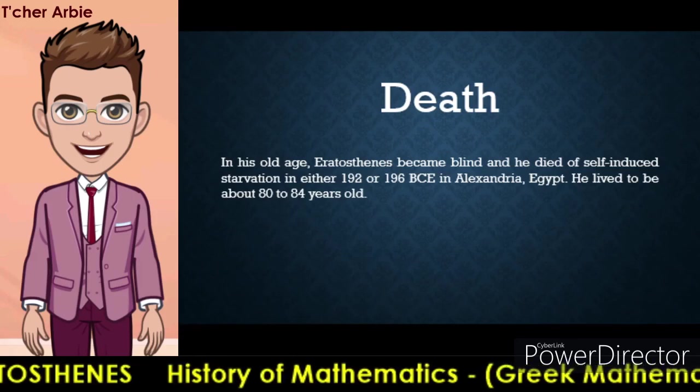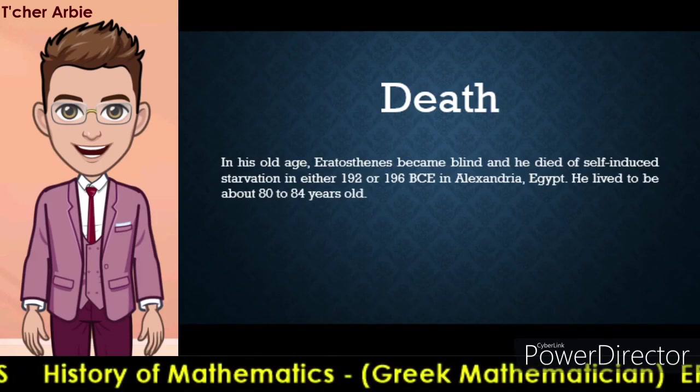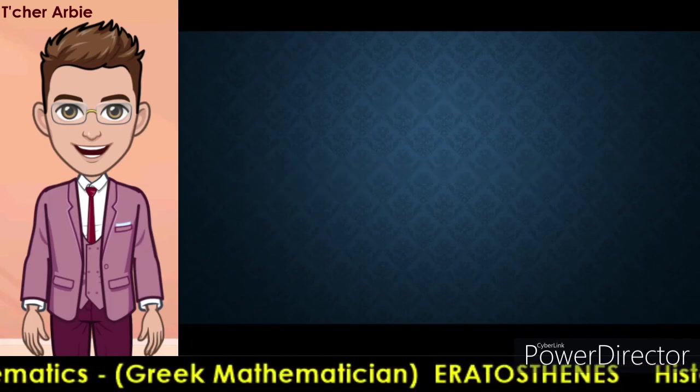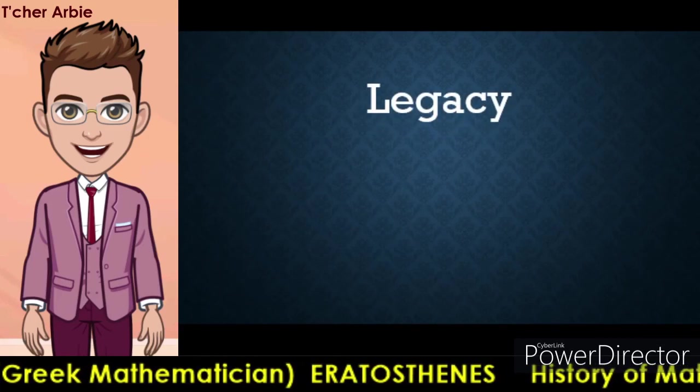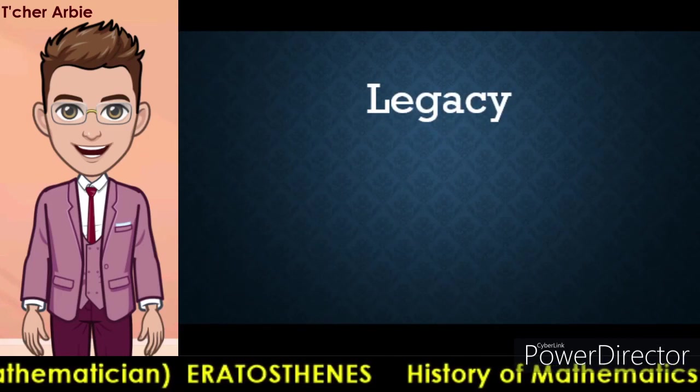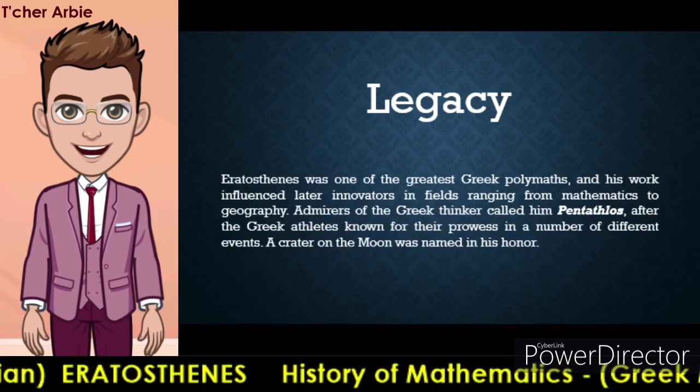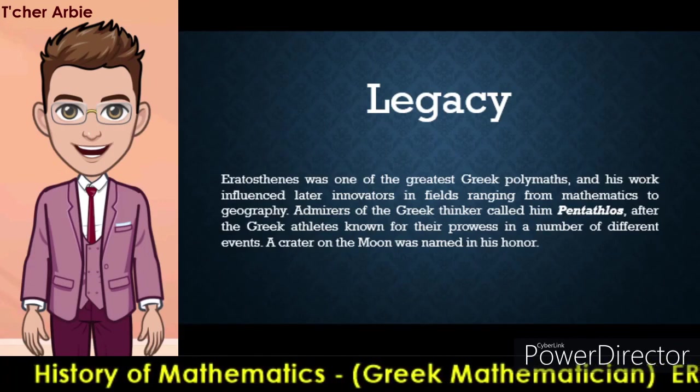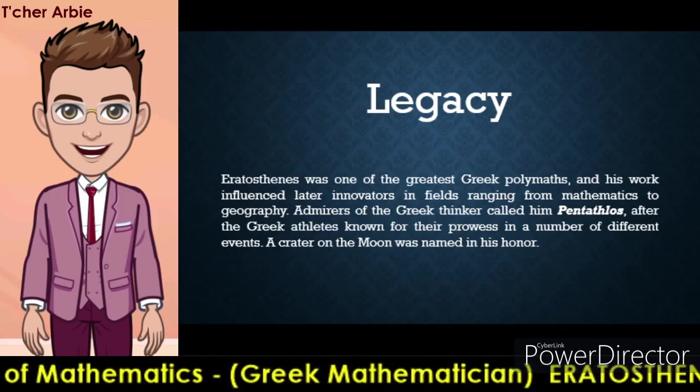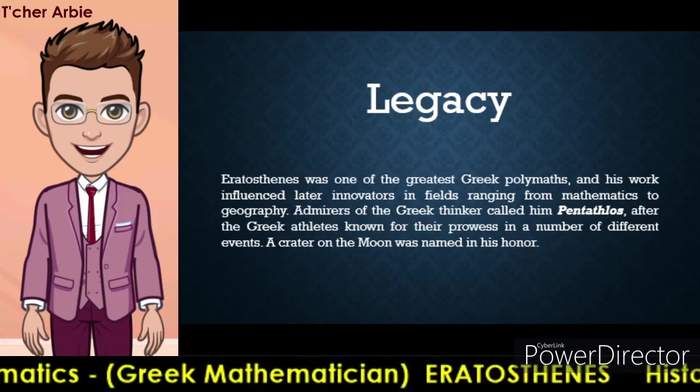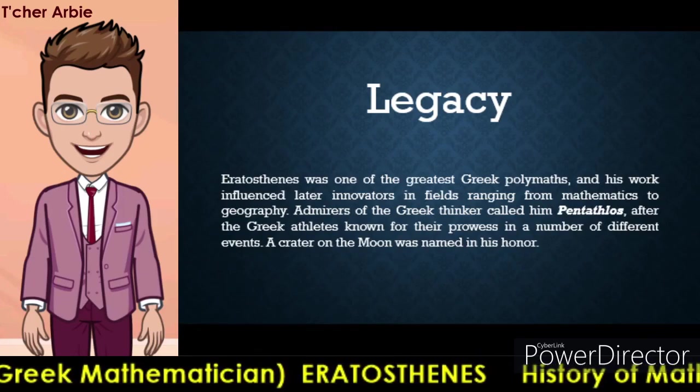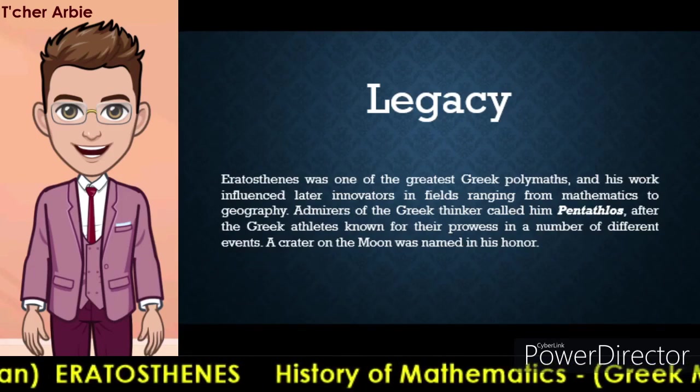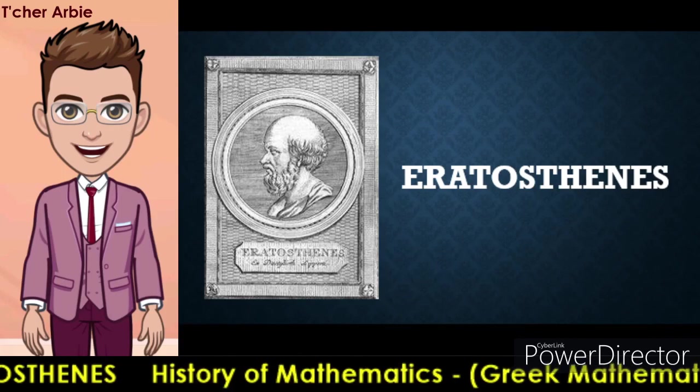He lived to be about 80 to 84 years old, and his legacy endured. Eratosthenes was one of the greatest Greek polymaths, and his work influenced later innovators in fields ranging from mathematics to geography. Admirers of the Greek thinker called him Pentathlος, after the Greek athletes known for their prowess in a number of different events. A crater on the moon was named in his honor, and that is Eratosthenes.